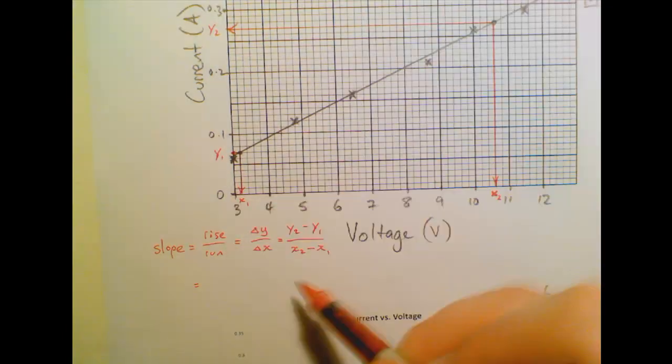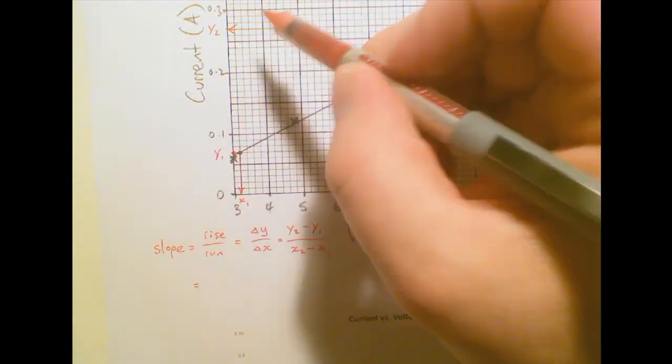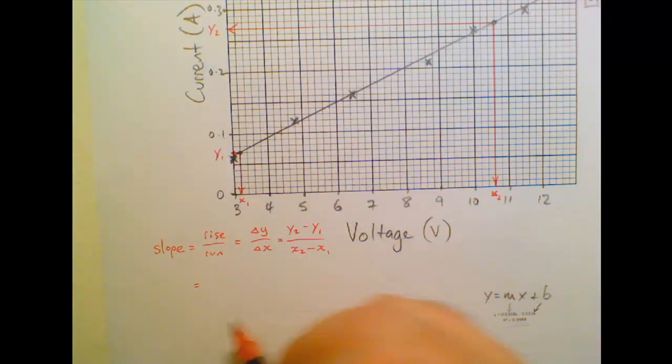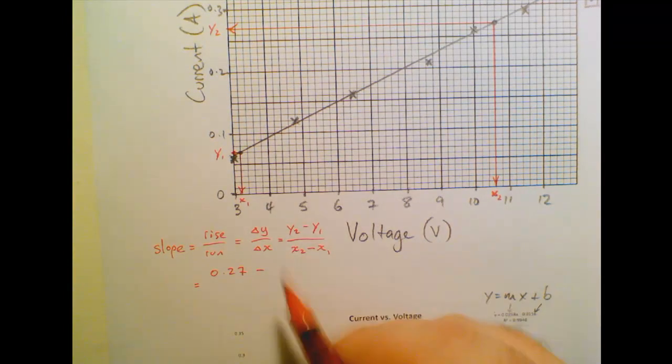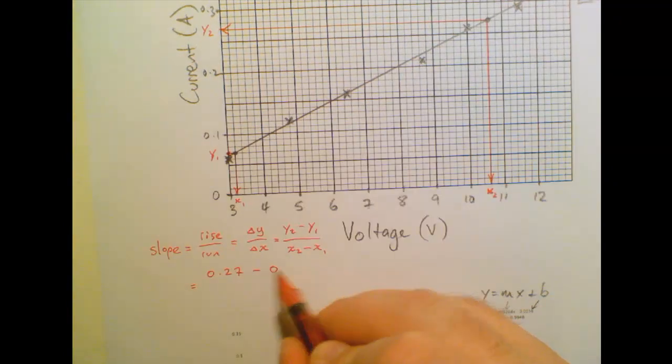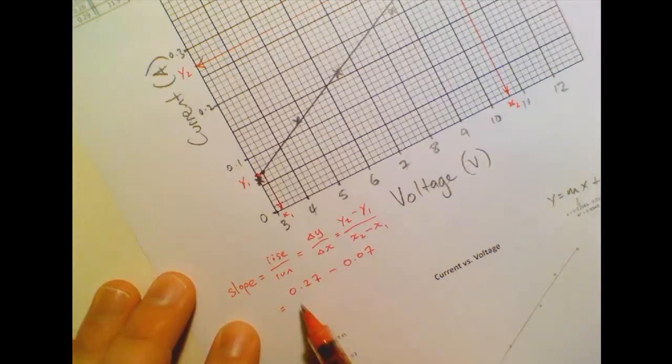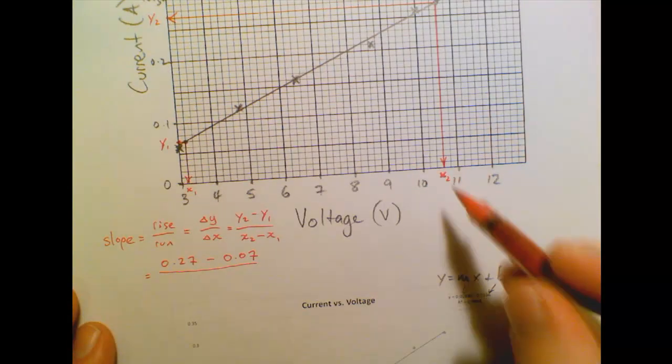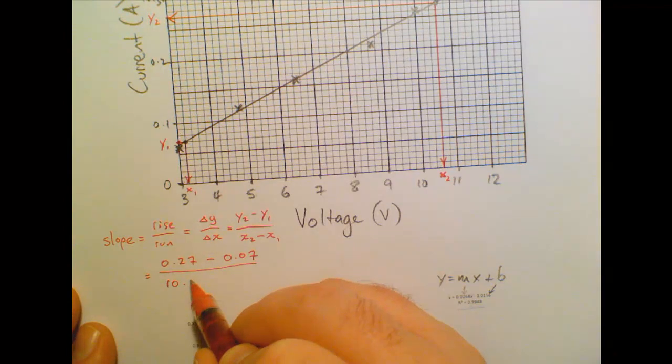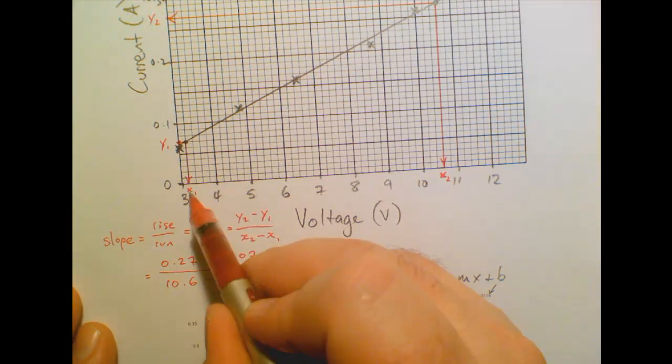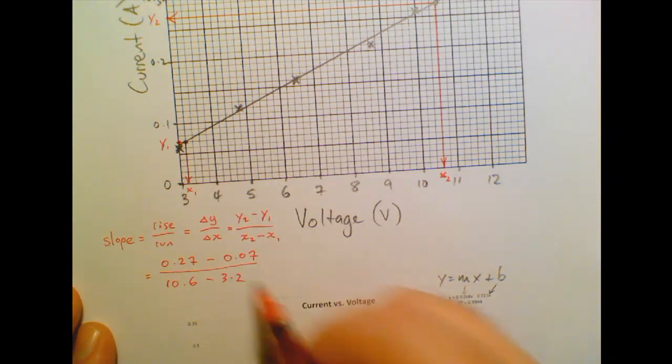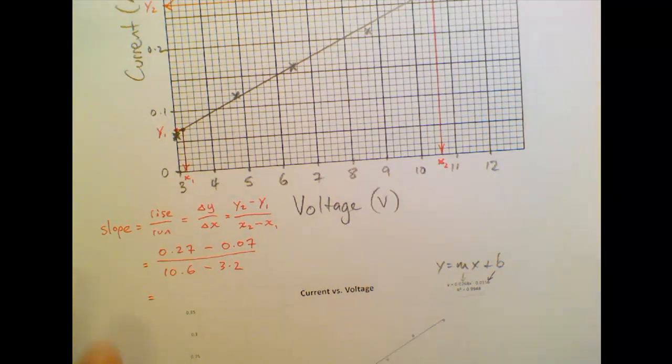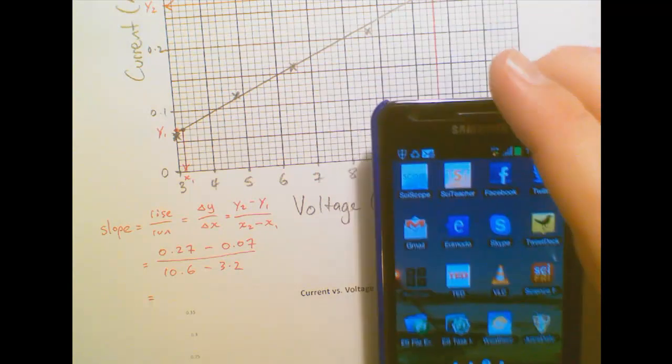And then now let's work it out. So we're going to find out what y2 is, what y1 is, and x2 and x1, and then put it all in here. So y2 is 0.27 minus 0.07 and then over x2, which is 10.6 minus 3.2. And then I'll just get my calculator and we'll work that out.